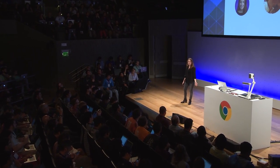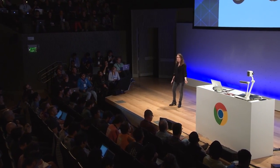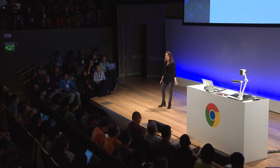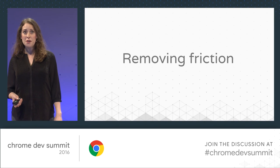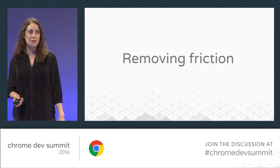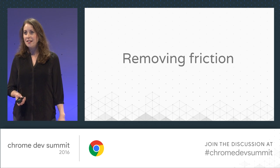We've already given you tools to solve issues around reliability or to create app-like experiences by adding PWAs to the home screen. And now we want to focus on two missing flows: sign-in and payments. AG and I are going to spend the next half hour talking about how Chrome is helping to remove friction from your sign-in flows by making signing in easier in a simple and secure way.